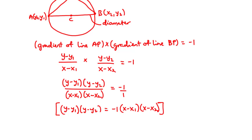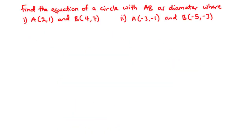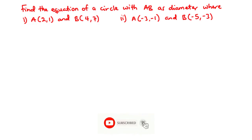Now let's try a couple of examples. We have two questions. We are going to find the equation of a circle with AB as diameter where: (i) A is (2, 1) and B is (4, 7), and (ii) A is (-3, -1) and B is (-5, -3). We consider point A as (x1, y1) and point B as (x2, y2).